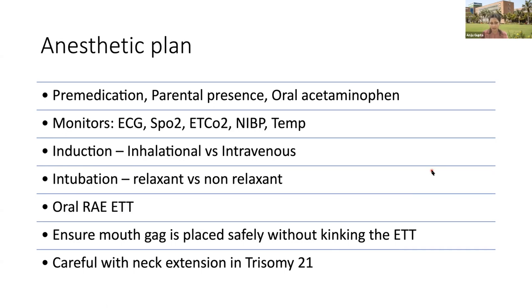Intubation can be relaxant-based or non-relaxant-based, but generally a relaxant is used. An oral RAE endotracheal tube is the commonly used technique; where unavailable, a reinforced flexometallic tube is used. Mouth gags should always be checked whenever applied — we should ensure there is no kinking of the endotracheal tube. One important concern in Down syndrome is atlanto-axial instability, and we must carefully avoid any excessive neck extension.